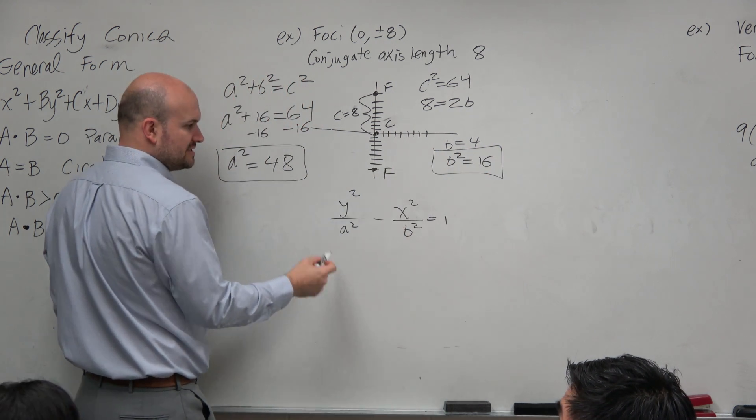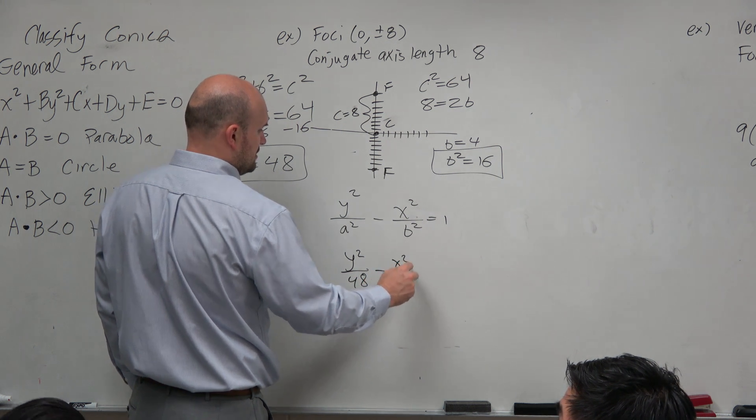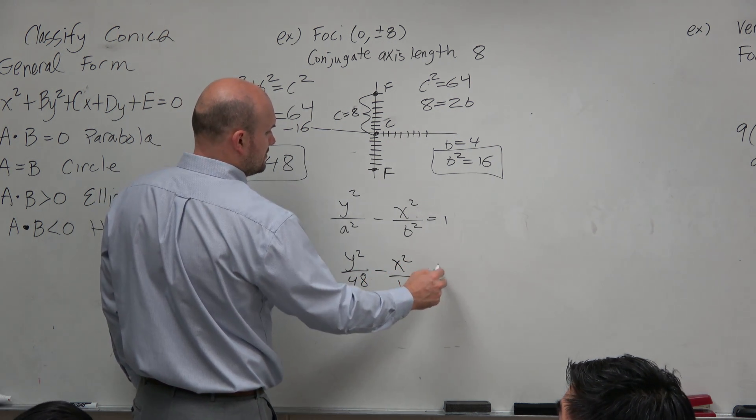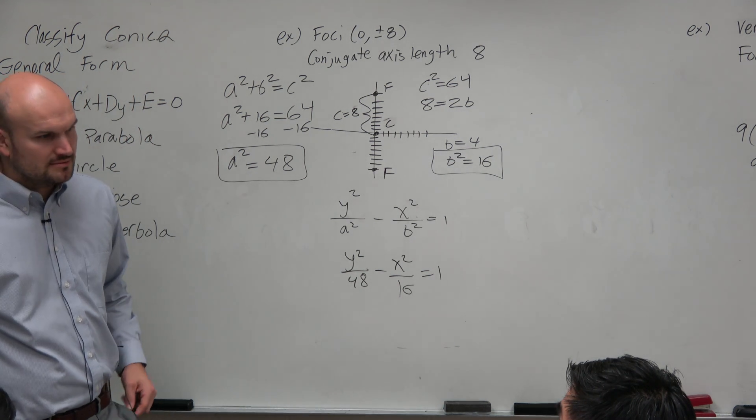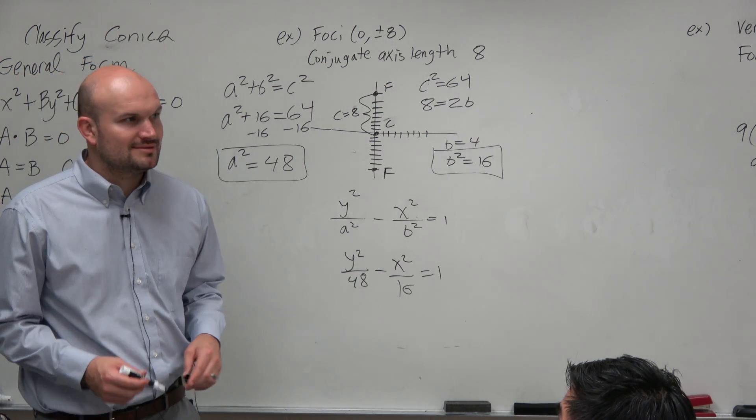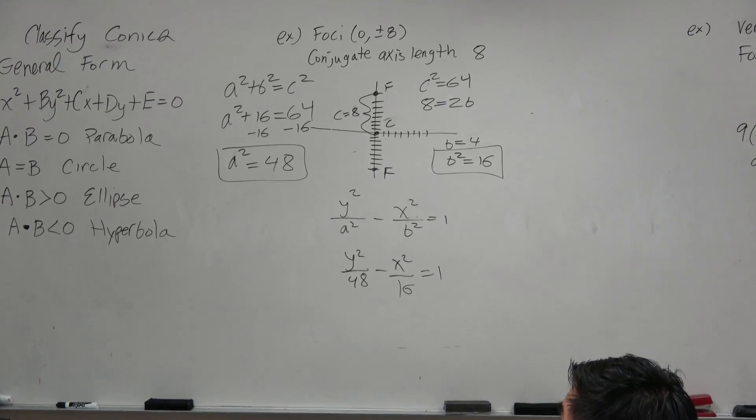And guys, all I've got to do is now plug it in. y squared over 48 minus x squared over 16 equals 1. Wasn't that bad, was it? No? It was? Painful? Torture? Stunned just a bit. Stunned just a bit. Like a hornet or like a watch?